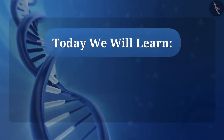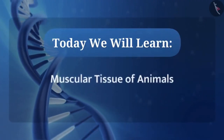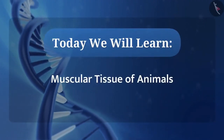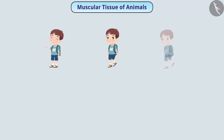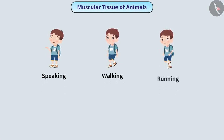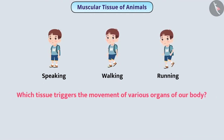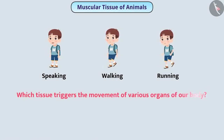Today we will learn about the muscular tissue of animals. In our daily lives, we perform different kinds of movements, such as speaking, walking, running, etc. Can you tell which tissue triggers the movement of various organs of our body?